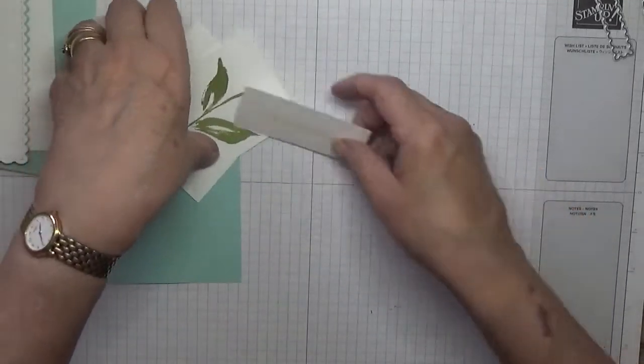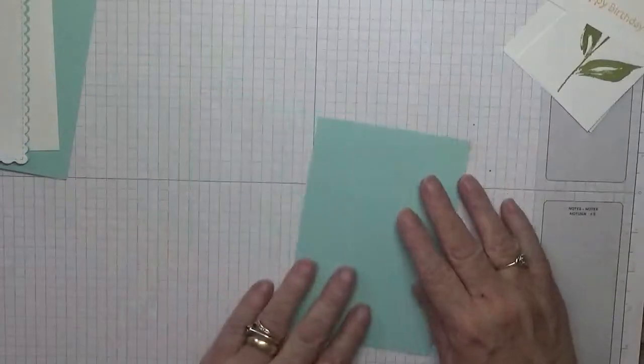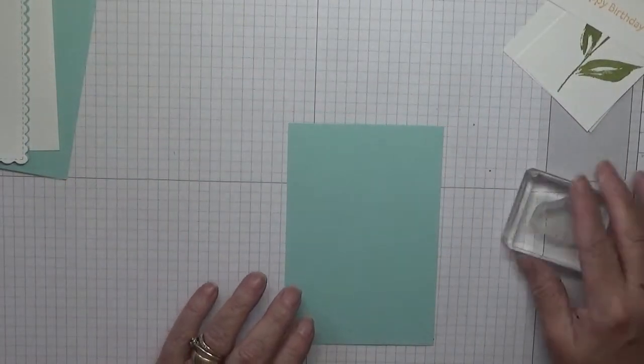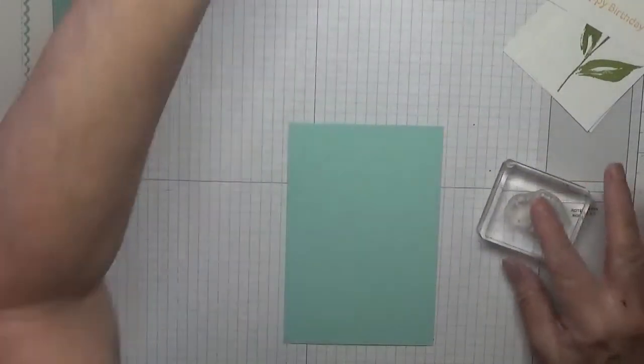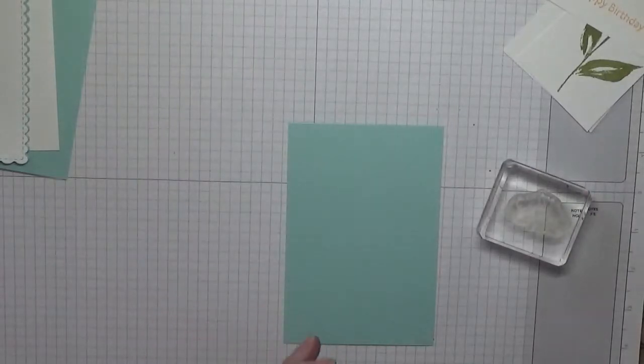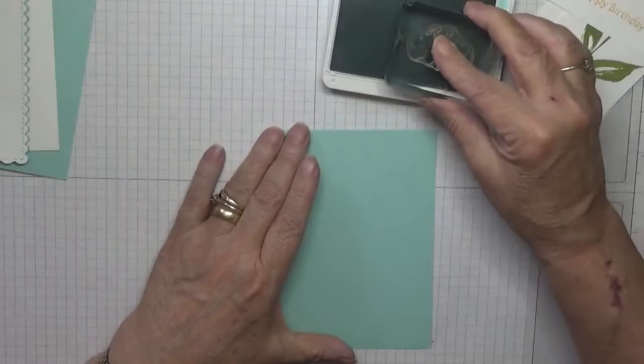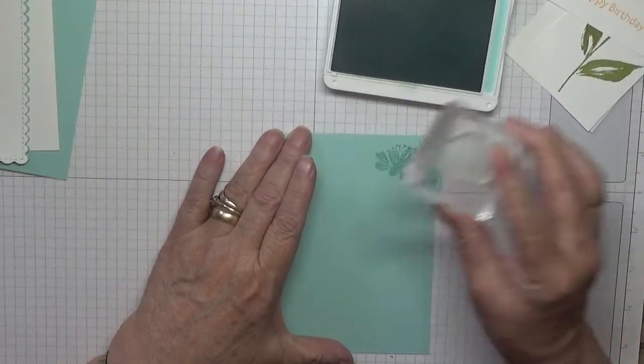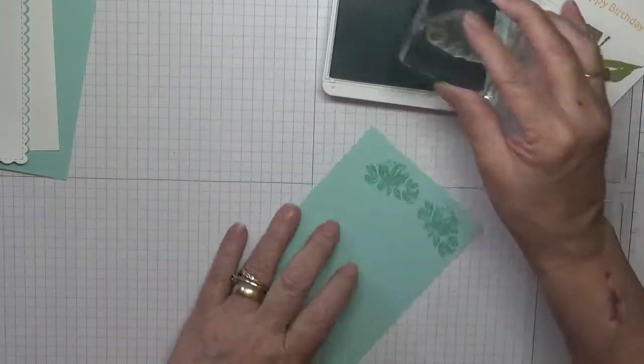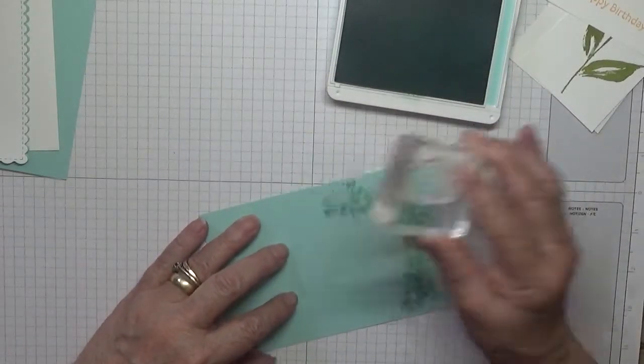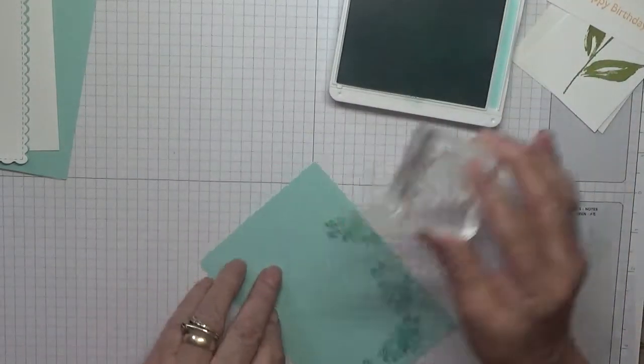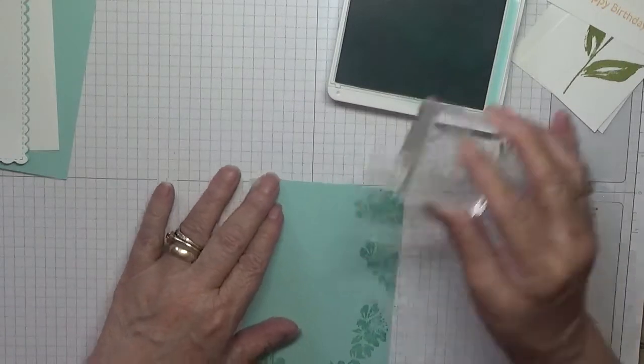So they all need punching and cutting out which we'll do afterwards. Right, the next one with our small flower, Pool Party - we are going to stamp randomly around the edge of this.